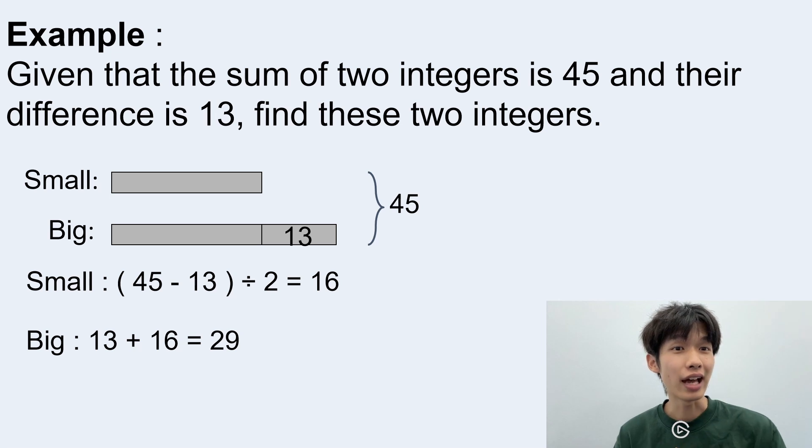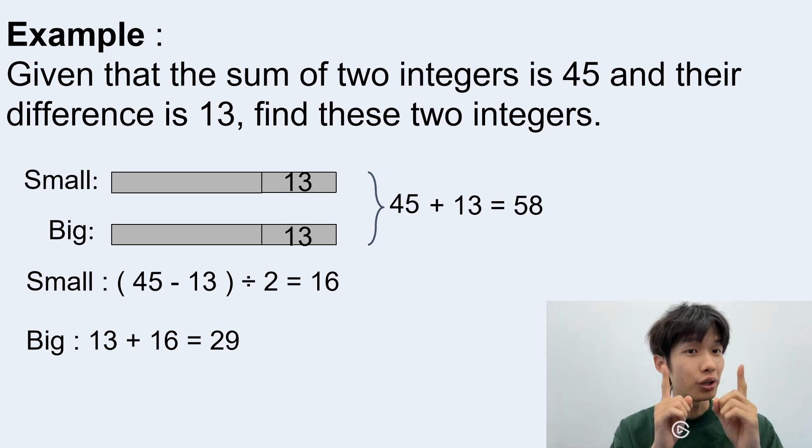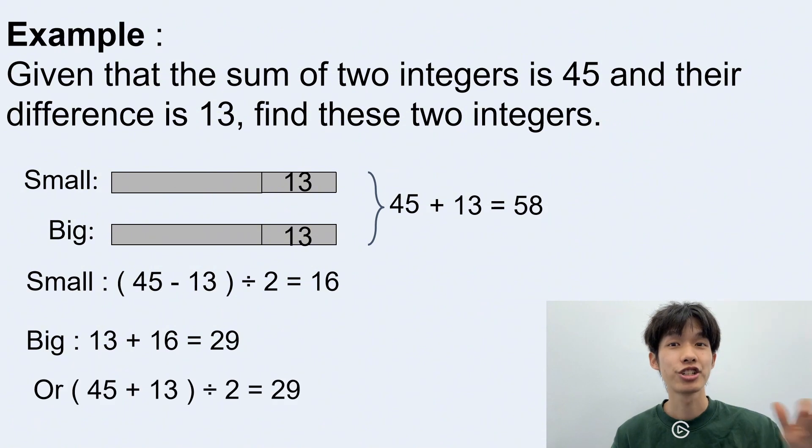Let's see. We can also add the difference to the small number. So in that case, look, here we have two identical big numbers. And they have the sum equals to 58. So if we are trying to find each big number, what should we do here? We're just dividing the 58 by 2 and give us how much? Also 29 as the final answer.